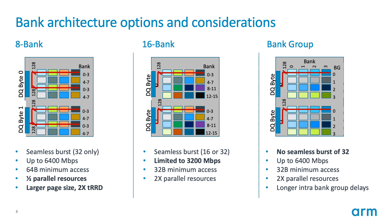The 16-bank mode supports burst of 16 or 32 with a 256-bit prefetch, a 32-byte minimum access, twice the parallel resources, but is limited to 3200 megabits per second. The bank group architecture also has 16 banks organized into four banks per bank group, supports up to 6400 megabits per second, supports burst of 16 or 32 with a 256-bit prefetch, a 32-byte minimum access, and theoretically 2x parallel resources, but requires accounting for longer inter-bank-group delays.